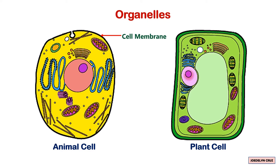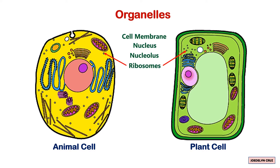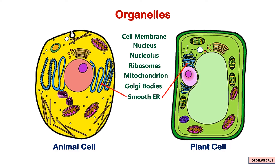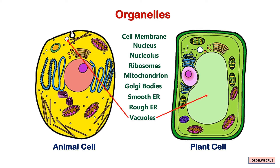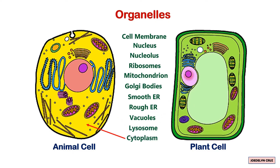The organelles present in both animal and plant cells are: cell membrane, nucleus, nucleolus, ribosomes, mitochondrion, Golgi bodies, smooth endoplasmic reticulum, rough endoplasmic reticulum, vacuoles, lysosome, and cytoplasm.